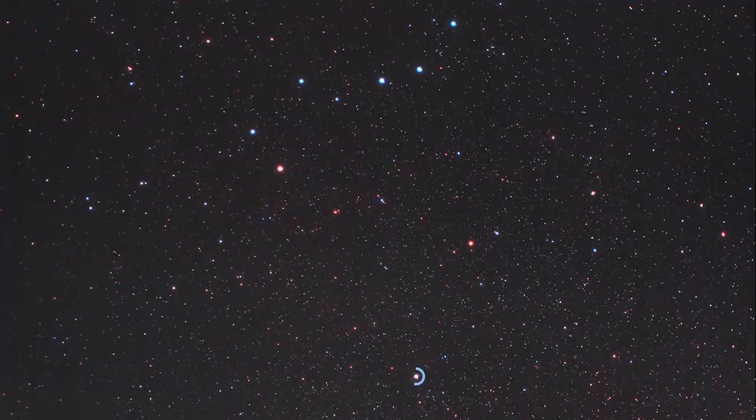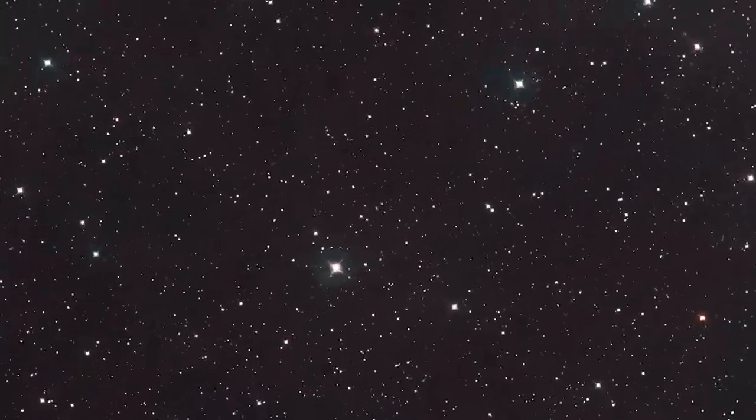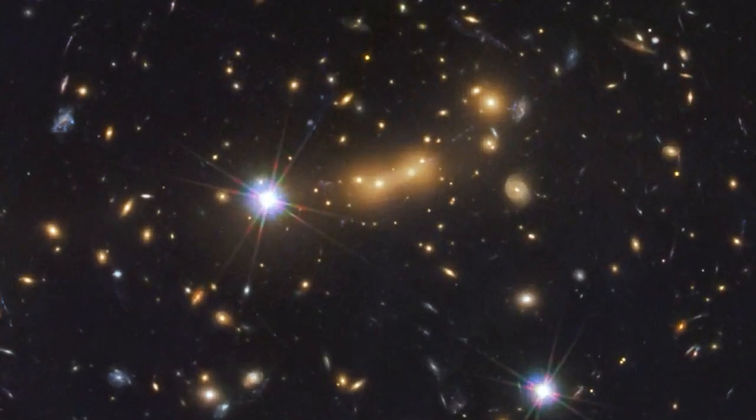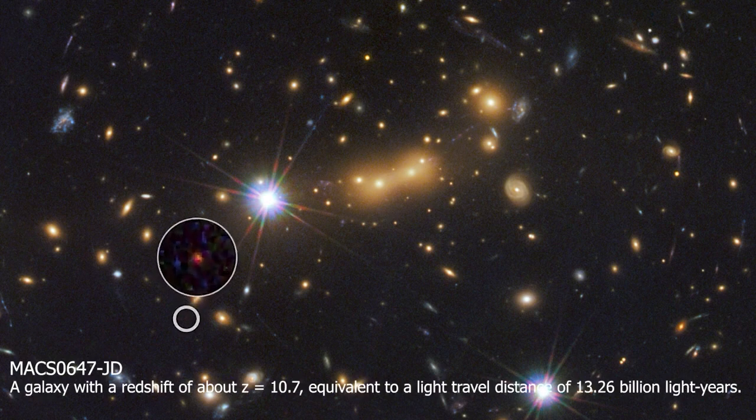Ten years ago, with the help of the Hubble Space Telescope, we found a galaxy that we later dubbed Max 0647-JD. We had never before done any work on high redshift galaxies, yet here we were, looking at what might be the most distant galaxy ever discovered.